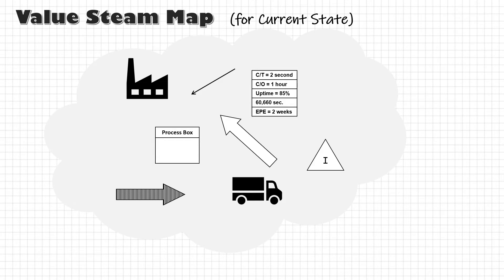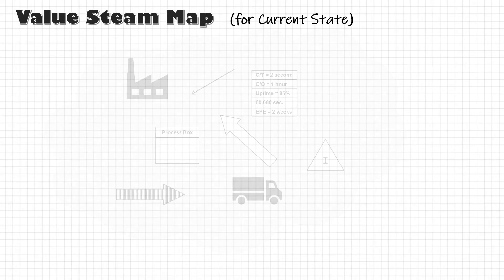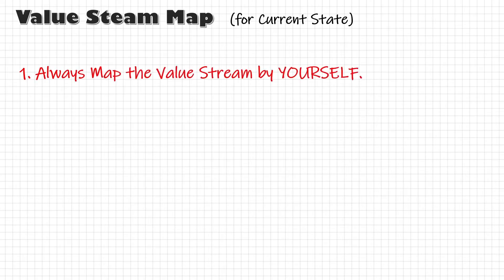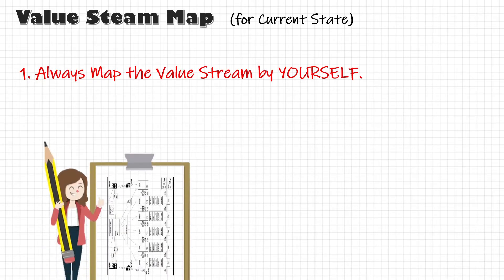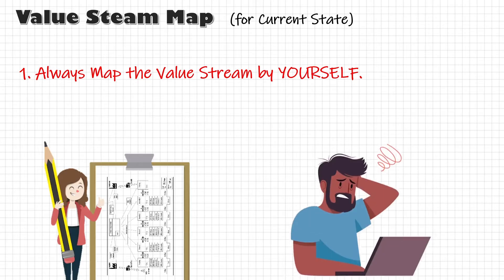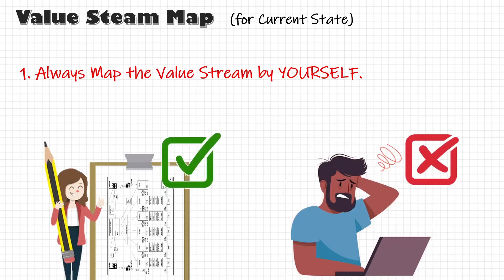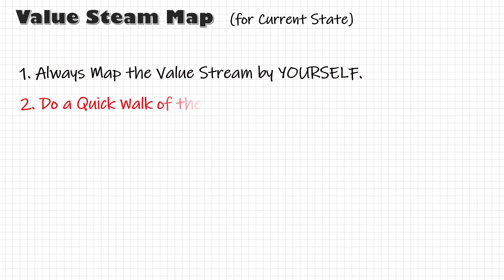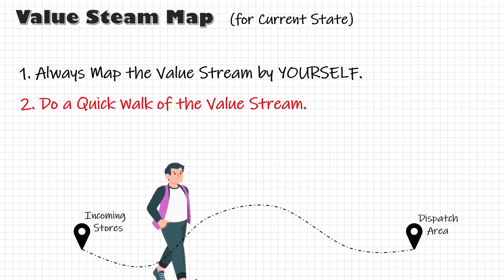Now before we begin, let's go through a few mapping tips that will help you map your process sequence accurately. Number one, always map the value stream by yourself. Do not rely on the standard time of the process — study the actual time yourself. Take a paper and pencil and draw the map on the spot, because you may miss some details if you wait to go back to your computer. Number two, start with a quick walk from incoming material to dispatch to get a quick idea of the flow and process sequence.